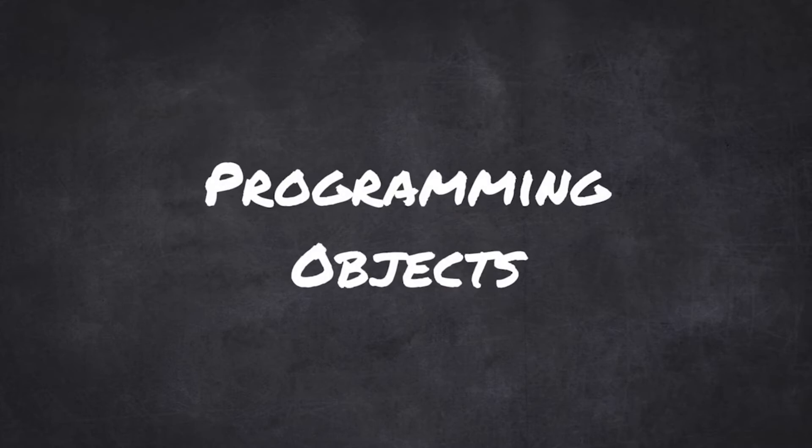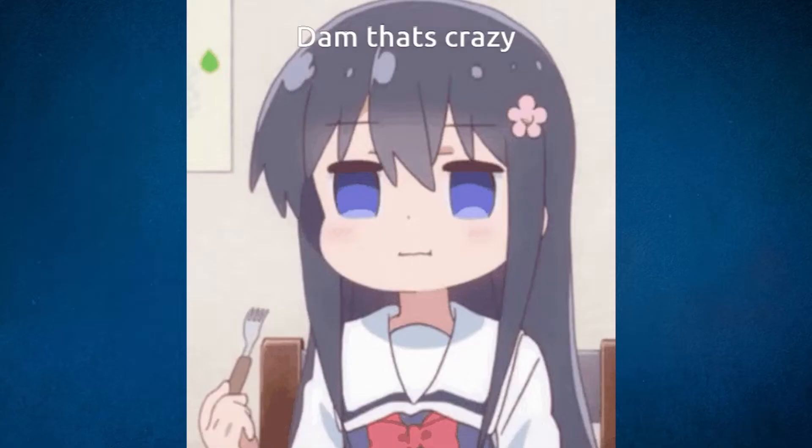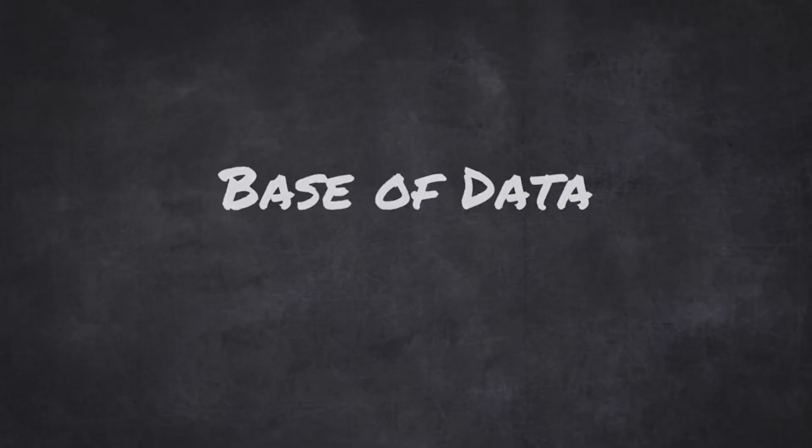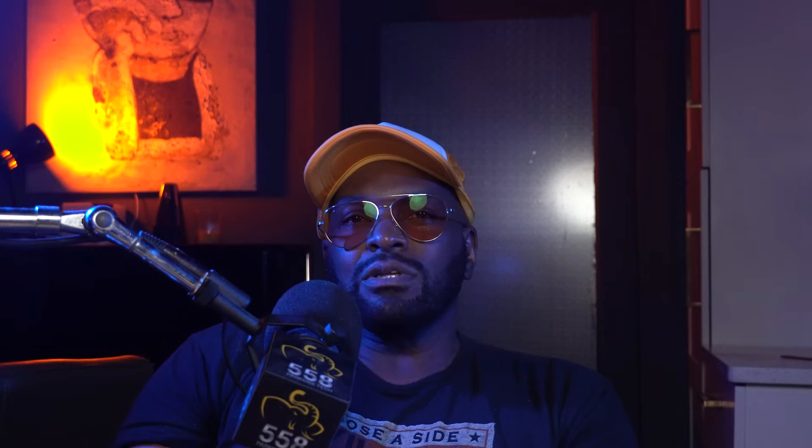The other thing I want to share is this: if you ever hear a term in tech and you're lost, try this little trick — say it backwards. So if I say 'object-oriented programming,' backwards it's 'programming objects.' If I say 'database' and I'm wondering what that is, backwards it's a 'base of data.' Sometimes that'll work for you — it's a little trick that I use.